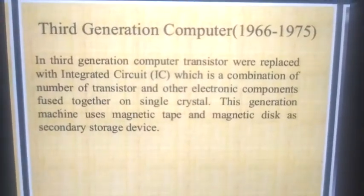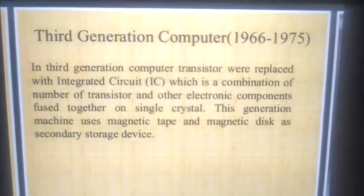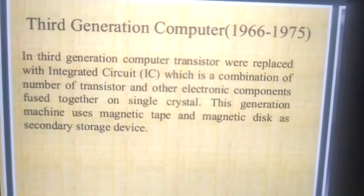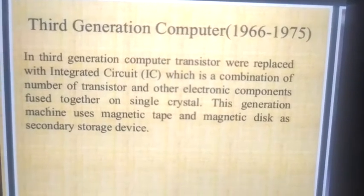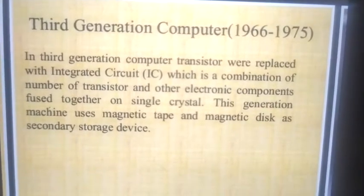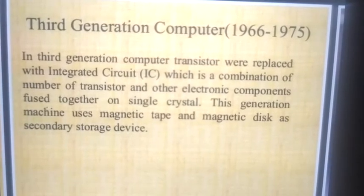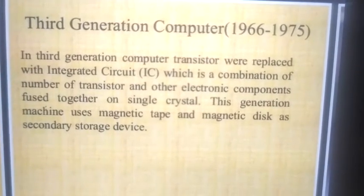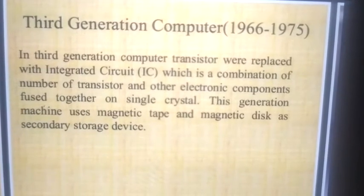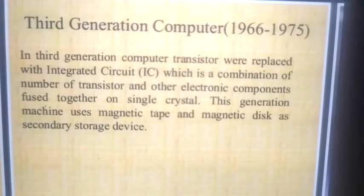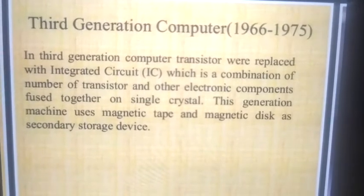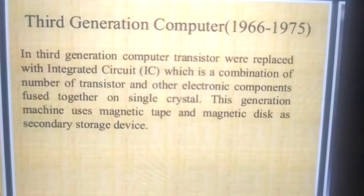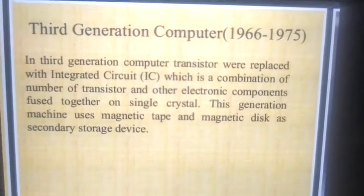The second generation computer is better than the first generation computer. Now, the third generation of computer started from 1966 to 1975. In the third generation, transistors were replaced with the IC — integrated circuit — which is a combination of a number of transistors and other electronic components fused together on a single crystal. This generation's machines use magnetic tape and magnetic disk as the secondary storage device.